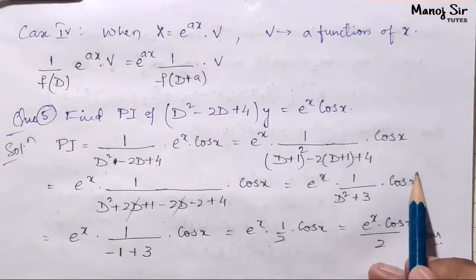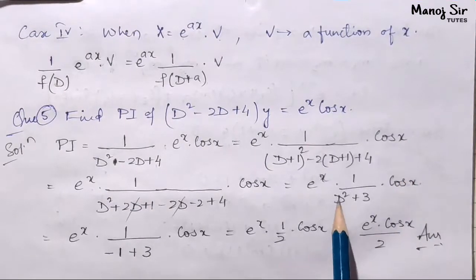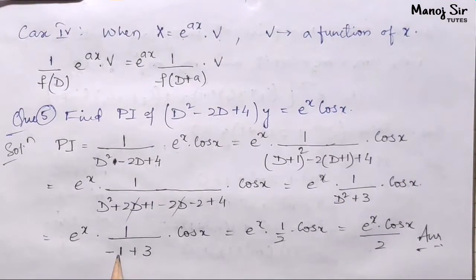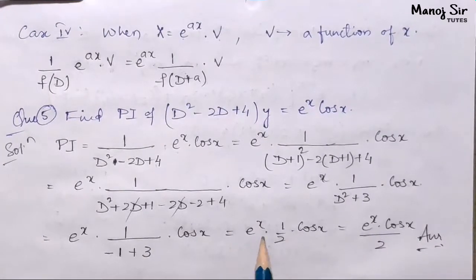So -1 + 3 = 2. Our answer is e^x cos x / 2. This is the final answer.